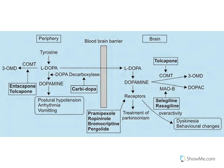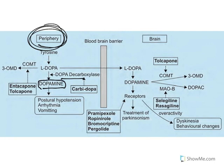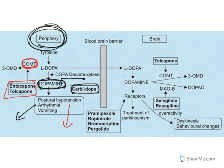Now understand this slide. Levodopa is the drug used to treat Parkinson's disease — it can cross the blood-brain barrier, is converted into dopamine, and shows its effects on receptors. Peripherally, before reaching the brain, if levodopa is decarboxylated, you get dopamine. To inhibit that, carbidopa is used. If dopamine is peripherally released, adverse effects occur: dopamine acting on beta receptors causes hypotension, arrhythmia, and vomiting. Peripherally, levodopa can also be metabolized by COMT, which is inhibited by entacapone and tolcapone. Once levodopa gets into the brain, it is converted into dopamine, which acts on dopamine receptors.